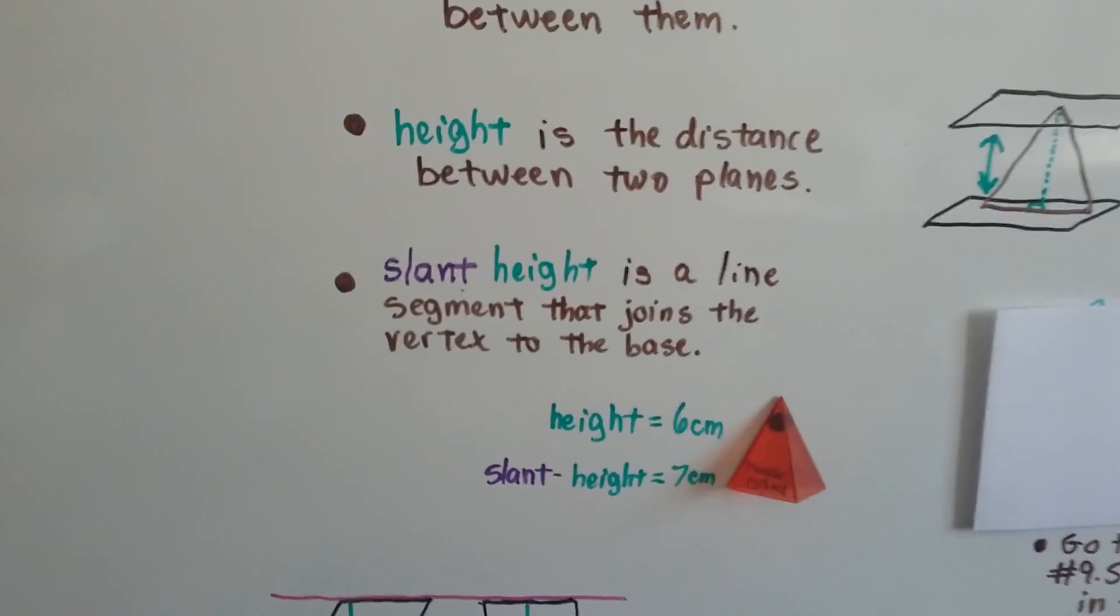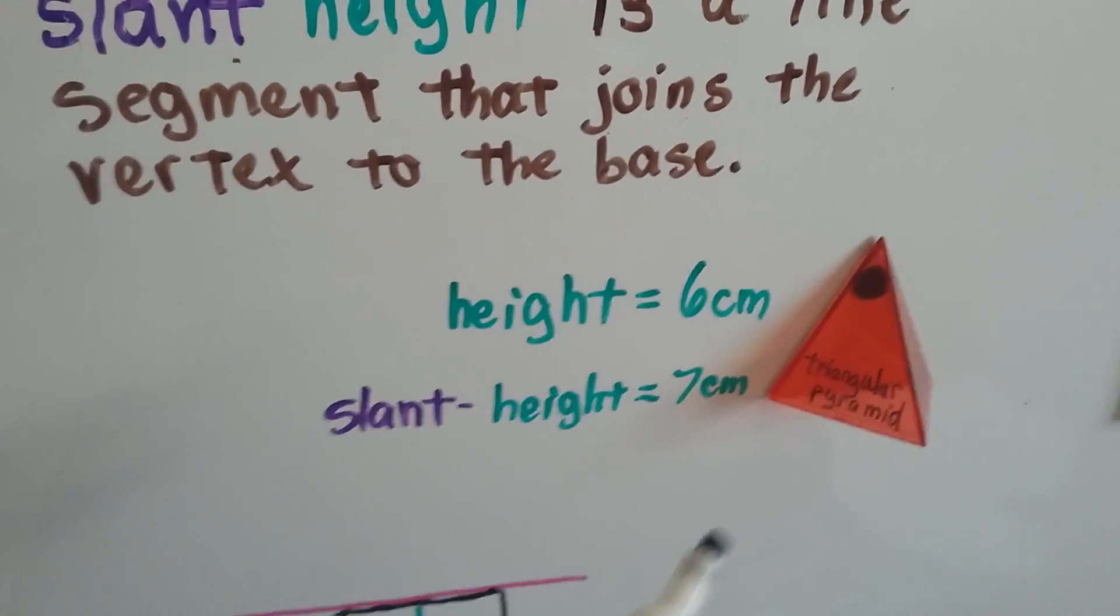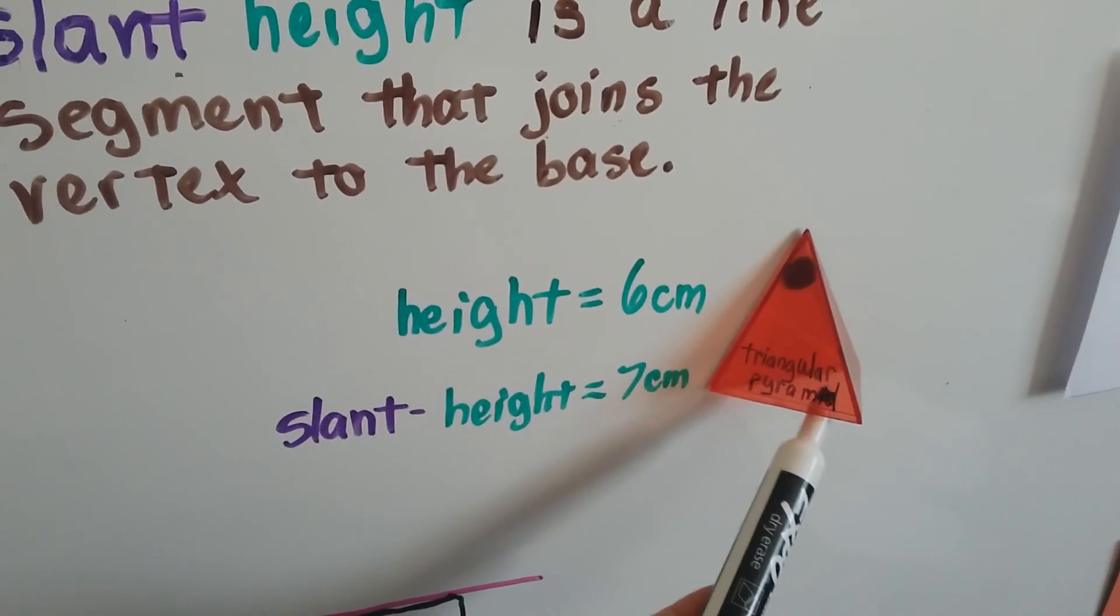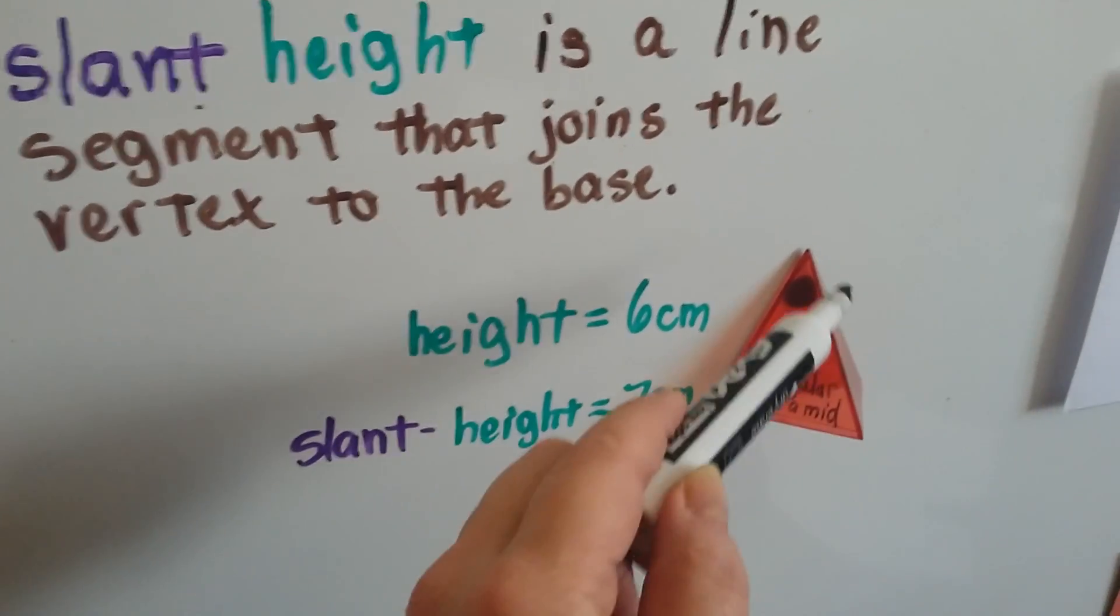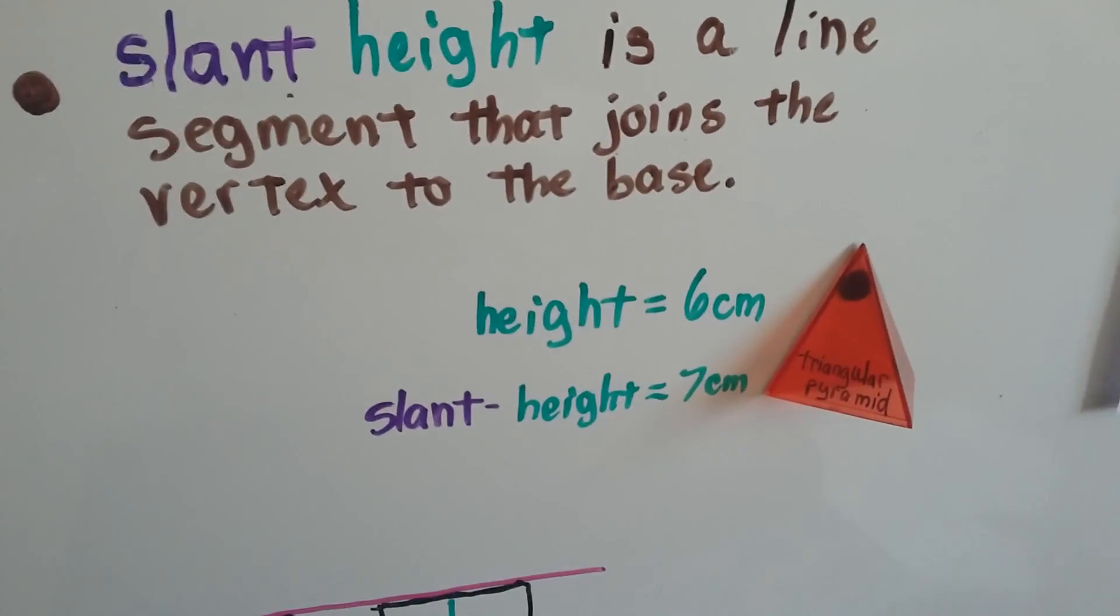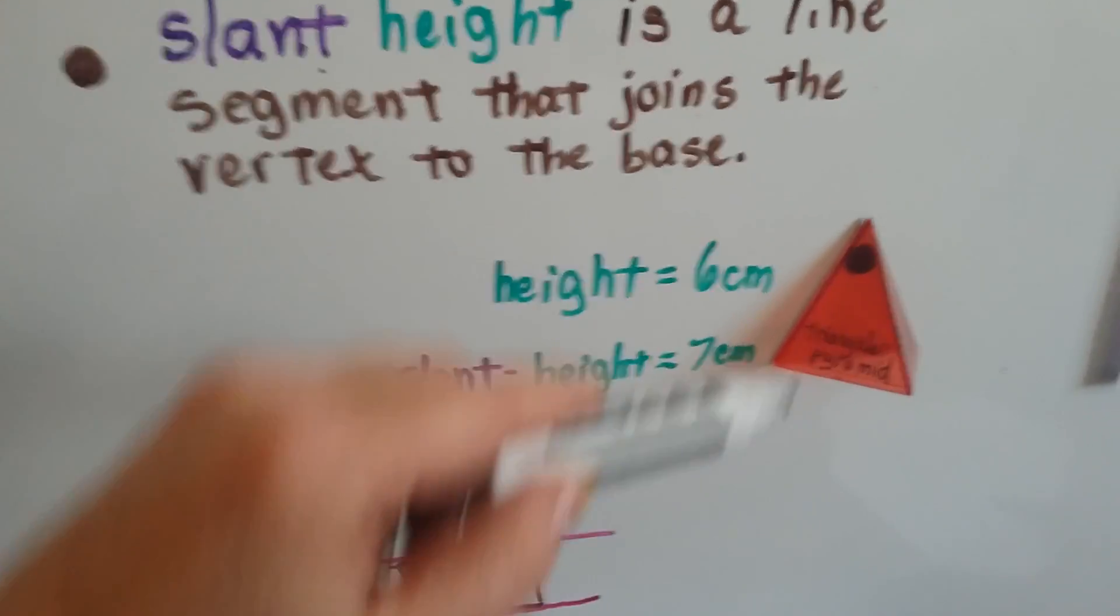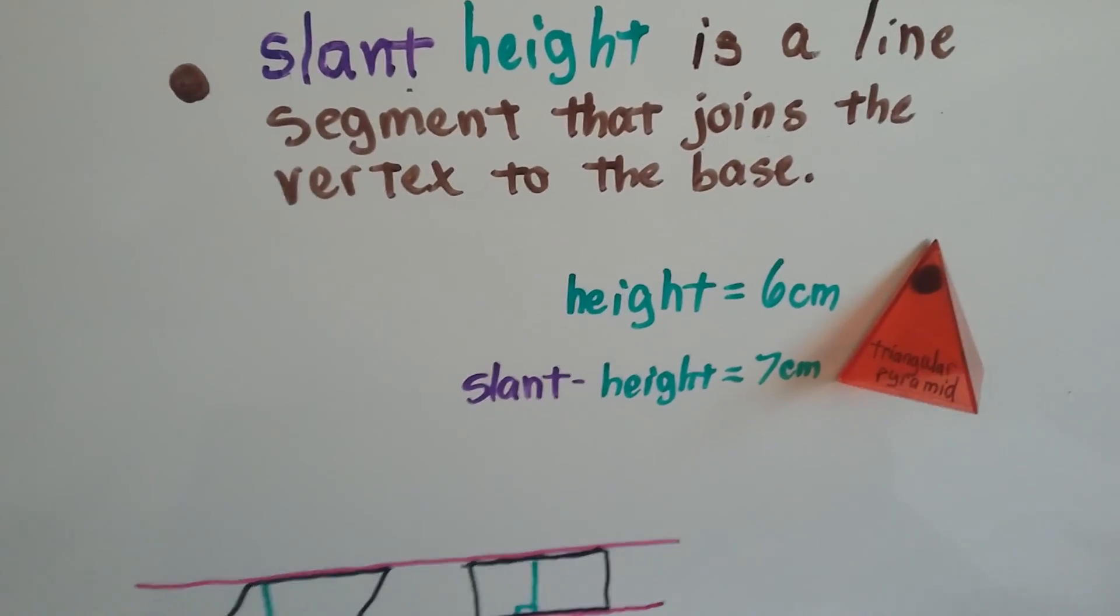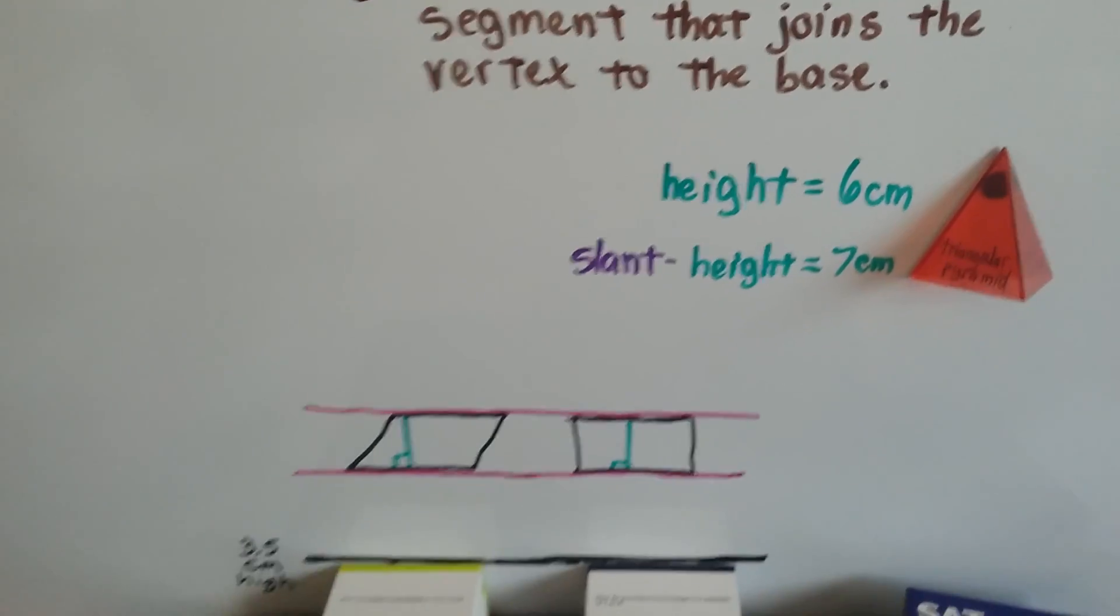So I have this triangular prism here and the triangular pyramid. And if I went from the very center of the base right here and measured straight up to this vertex, it was six centimeters. But when I measured the slant height for this side, it was seven centimeters. So there's a big difference.